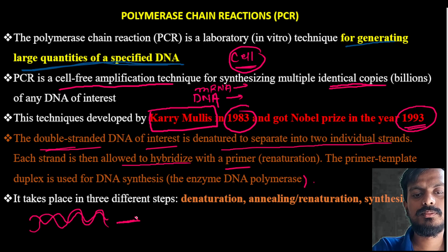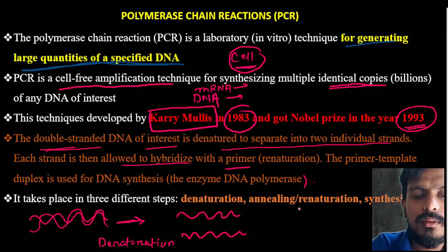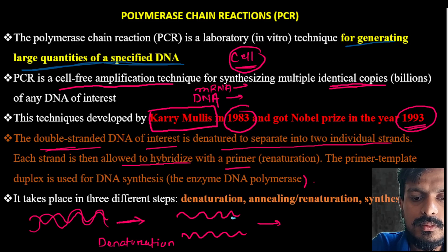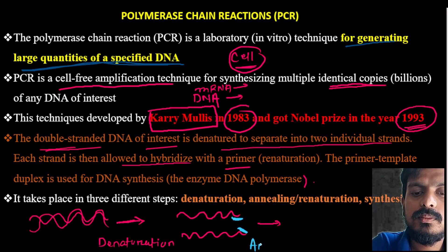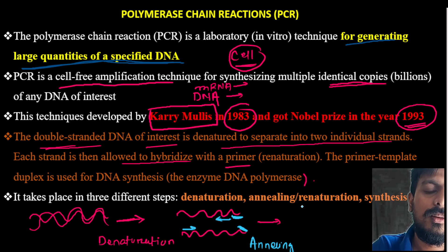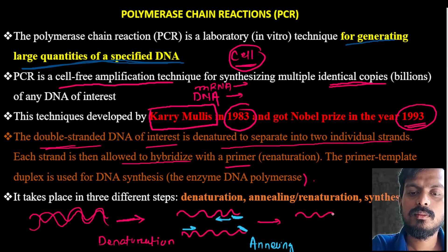The initial step is denaturation — during denaturation, these two strands get separated. The next step is binding of primers, which is called annealing. One primer moves in the forward direction, another in the reverse direction. Through the movement of these primers, two new DNA strands will be formed.